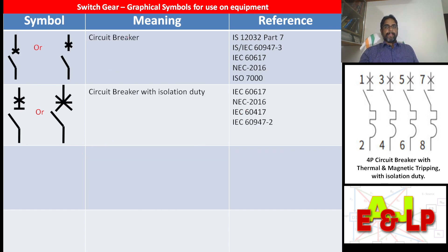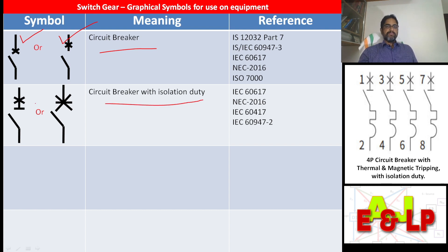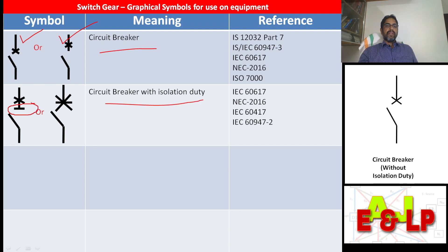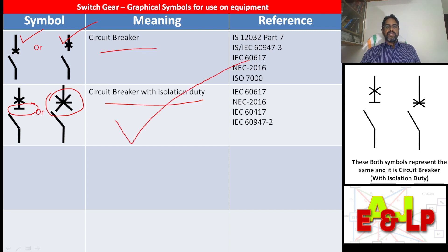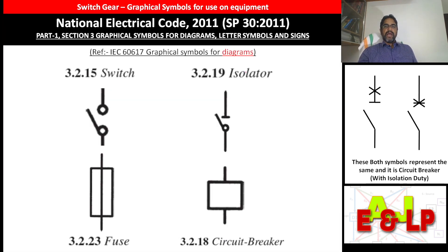Now it is circuit breaker — circuit breaker means just a cross line. Any of these symbols represent a simple circuit breaker. But the next one is circuit breaker with isolation duty. In this symbol, in addition to the symbol in the top part, a horizontal line will be there, and here it is clubbed — the cross is clubbed with the horizontal line and looks like a star. It is representing circuit breaker with isolation duty.